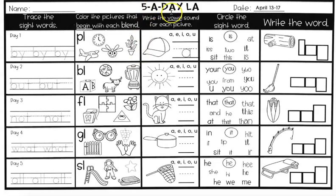In the third box, you're writing the vowel sound that you hear in each picture. A vowel is A, E, I, O, U. This is a picture of a cap — it's done for you. You can hear C-A-P; you can hear the A. So trace the A.